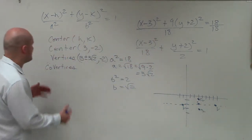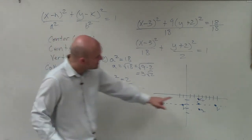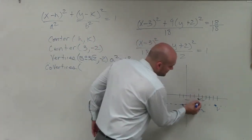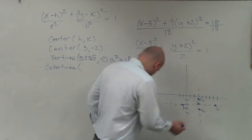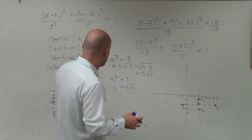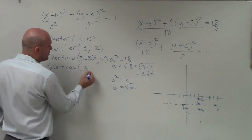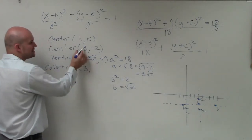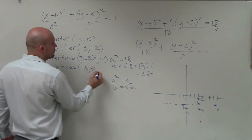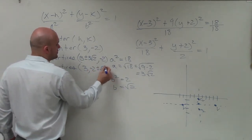When plotting the co-vertices, note that these lie on the minor axis. The x-coordinate does not change — both co-vertices share the same x-coordinate as the center. Only the y-coordinate changes, being plus or minus the square root of 2.